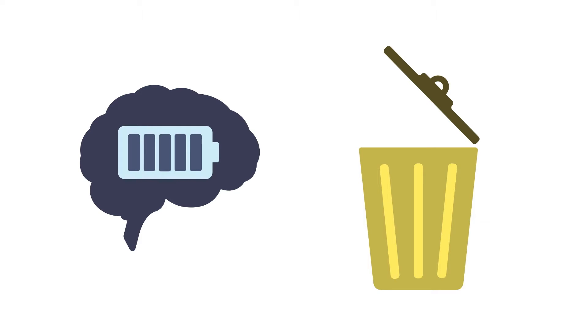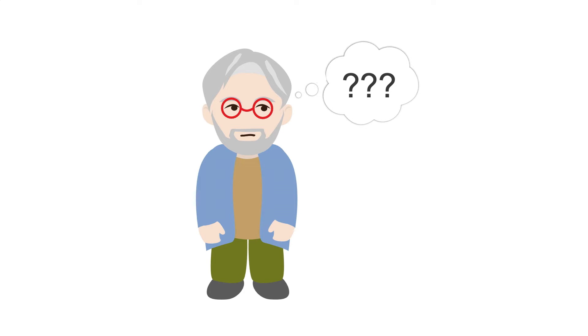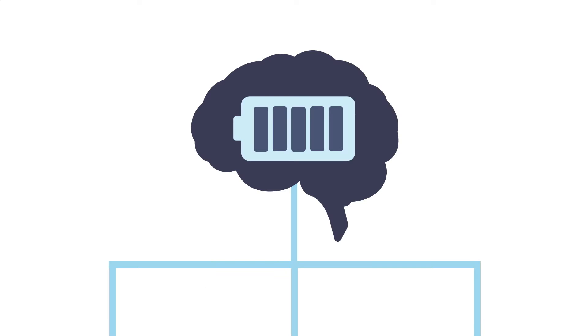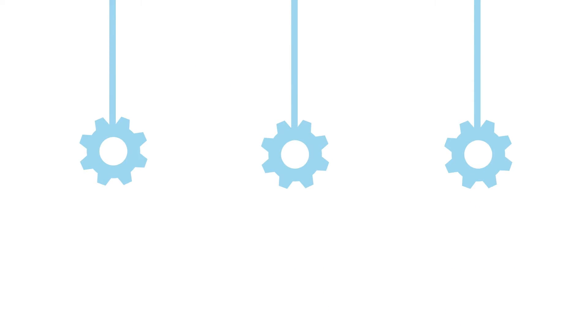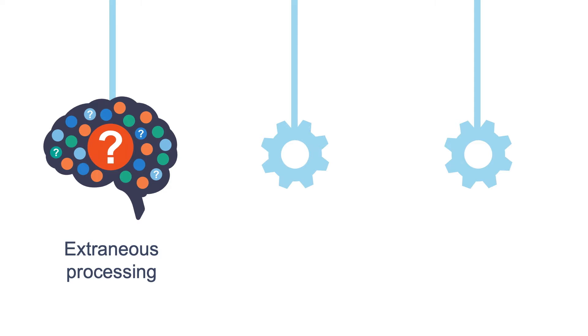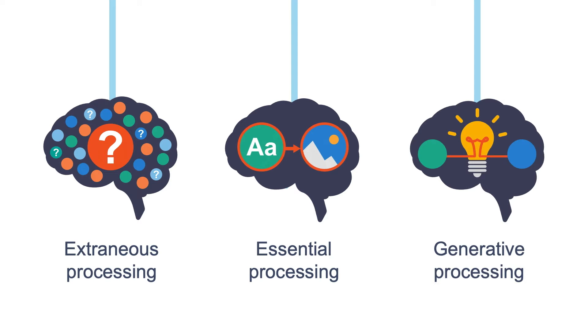As with other forms of energy, the energy of working memory can also be wasted — most often by teachers who don't try to understand how learning works. Broadly speaking, learning consists of three processes that consume energy and cause cognitive load: extraneous processing, essential processing, and generative processing.